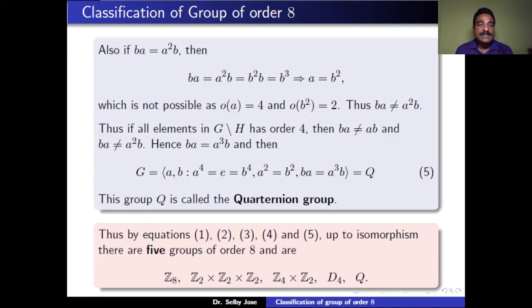So the only remaining choice is ba equals a³b. In this case, G is the group generated by a and b, with order of a and order of b both equal to 4, a² equals b², and ba equals a³b. This group is denoted Q and is called the Quaternion group.